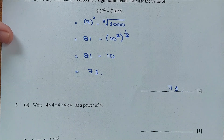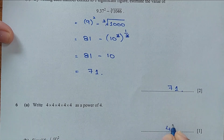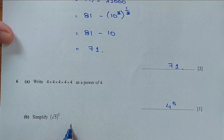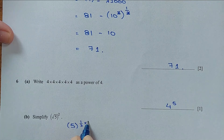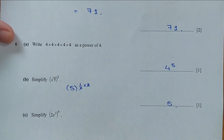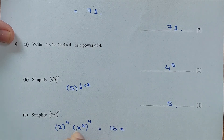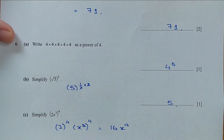Now for question number 6. Write this as a power of 4. Four comes 1, 2, 3, 4, 5 times, so four to the power 5. Part B: simplify the expression — 5 to the power of one-half times two, which equals just 5. Part C: simplify (2x³)⁴, which is 2 to the power 4 is 16 and x to the power 3 times 4 is 12. Answer: 16x¹².